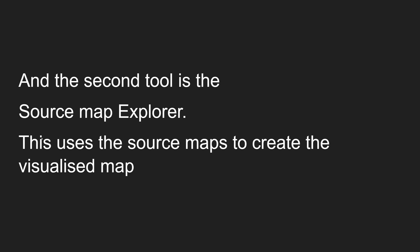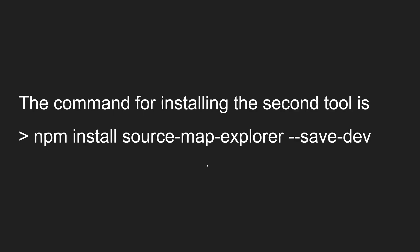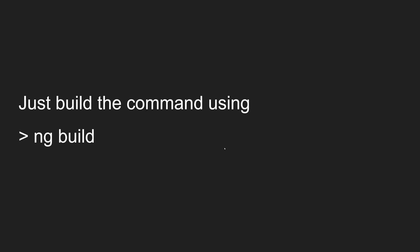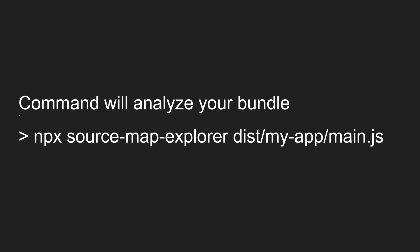The second tool is the source-map-explorer. This tool uses the source map instead of the stats file to create the visualized map. That is the main difference: webpack-bundle-analyzer uses the stats file, whereas source-map-explorer uses the source map file. The command for installing the second tool is: npm install source-map-explorer --save-dev. After installing that package as a dev dependency, you just normally run ng build.